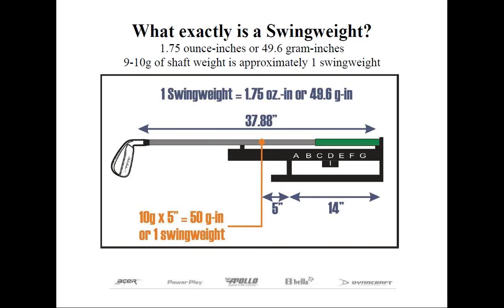If we know that 50 gram inches is one swing weight, and we divide by 5 inches, we know that it requires 10 grams of shaft weight at this length to change the swing weight by one point.